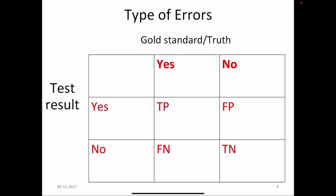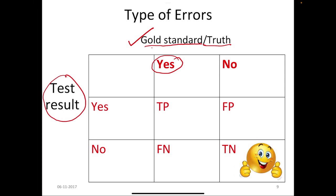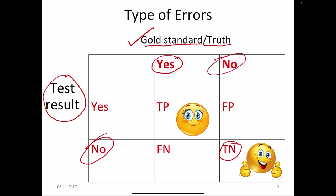We always have to construct a 2x2 table for effective analysis of a diagnostic test. The first rule is that the gold standard — the truth or the best test — will always be on the top, the test result you have will be on the left side, and yes will always be first. From this we generate true negatives (test says no, truth is also no), true positives (test says disease present, gold standard also says disease present), false negatives (test is negative but truth is positive), and false positives.